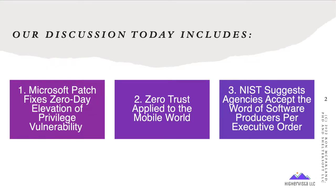Today we have three items on the agenda. We'll have a deeper conversation about what these mean to us as cybersecurity professionals, what we could do about them, and other conversations to flesh things out. First, Microsoft Patch fixes zero-day elevation of privilege vulnerabilities. Second, zero-trust applied to the mobile world. Third, NIST suggests agencies accept the word of software producers per executive order.